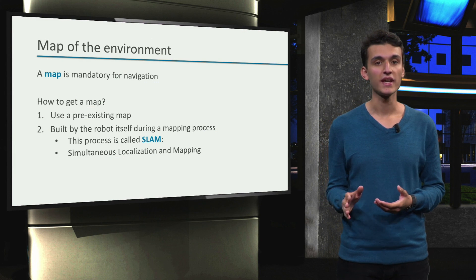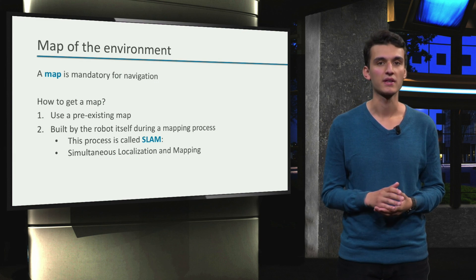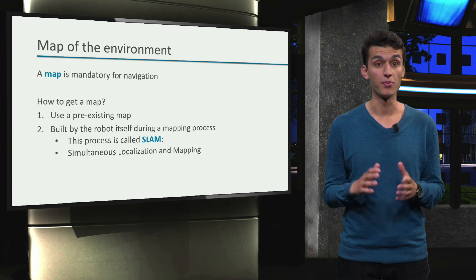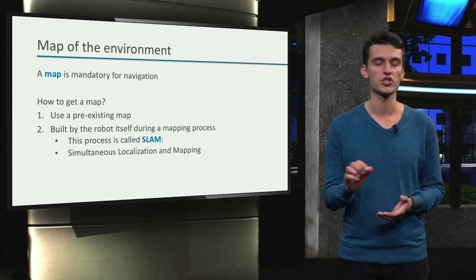This process is called simultaneous localization and mapping. That means the robot is building a map while keeping track of its own position.